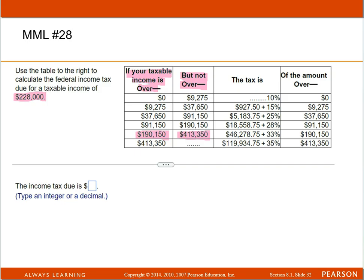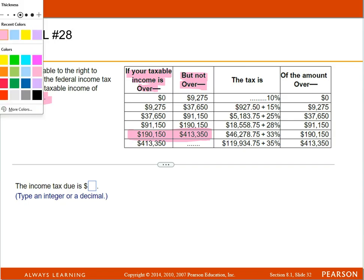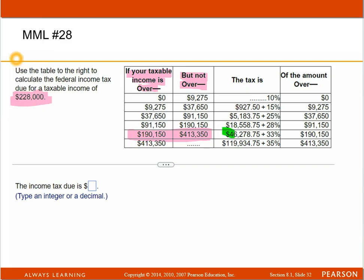So they're going to tax you an initial amount of this, so you've got to pay that plus 33%. Thirty-three percent would be 0.33 of the amount over. 'Of' means to multiply, of the amount over the $190,150.